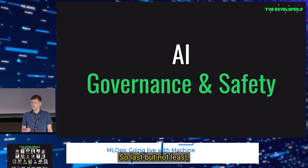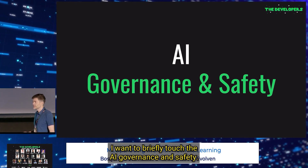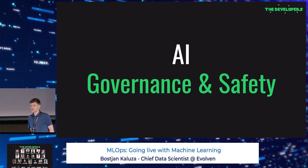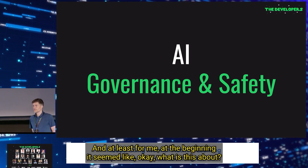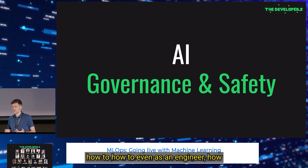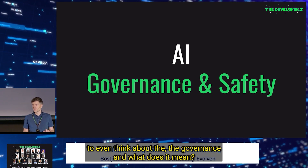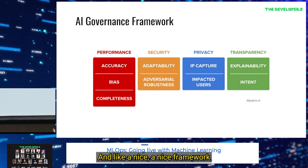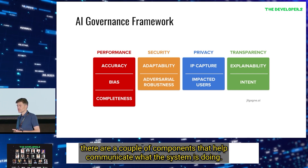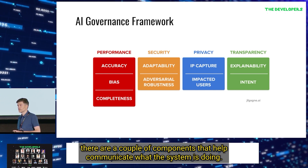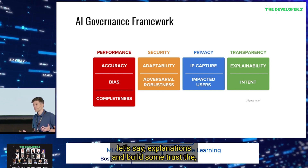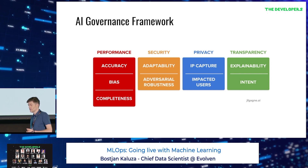Last but not least, I want to briefly touch AI governance and safety. This is a topic that is becoming more and more exposed. At the beginning it seemed like, okay, what is this about? How can an engineer even think about governance? A nice framework to understand it: when building a machine learning system, there are a couple of components that help communicate what the system is doing and build trust that the system you are building is safe. The first one, mostly an engineering approach, is about the performance of your machine learning model: what is the accuracy, what is the bias, what is the operational range when your model works?